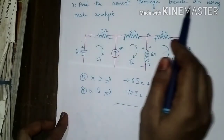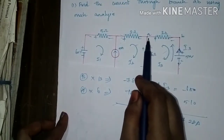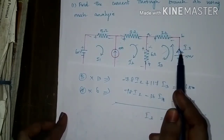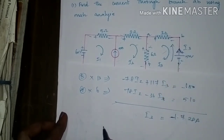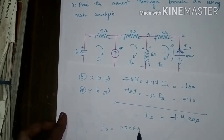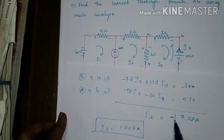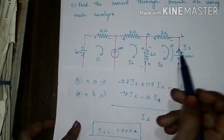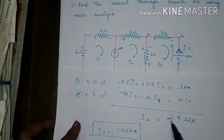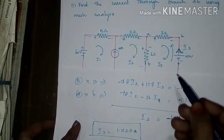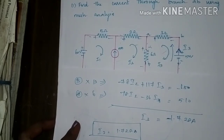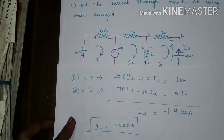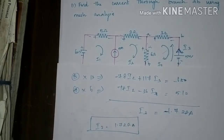They asked for the current flowing through branch AB, which is I3. The magnitude of I3 is 1.728 amperes. We had assumed the current direction as clockwise, but the negative sign indicates the current is actually flowing in the anti-clockwise direction.